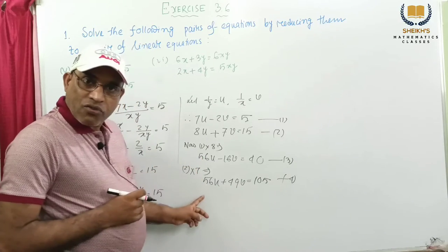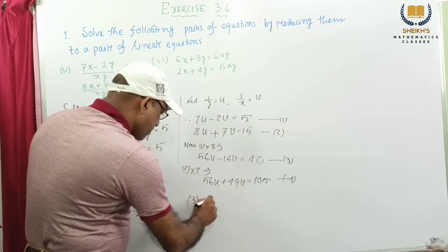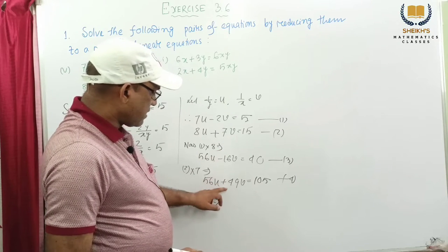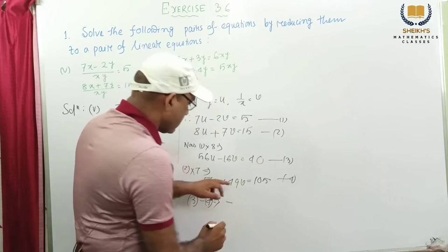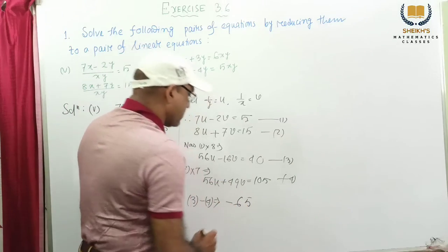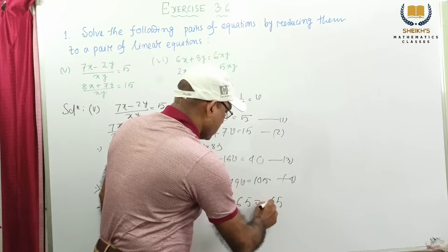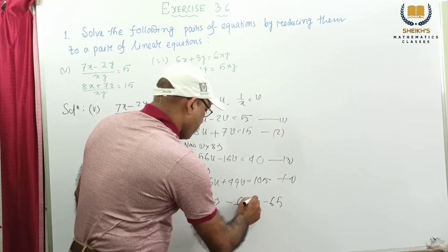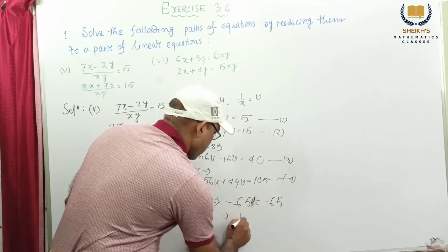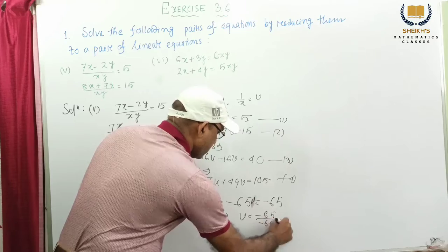Now these two are like coefficients: 56u, 56u. So we subtract these two. 3 minus 4 implies: if we subtract, this cancels. And minus 16v minus 49v will be minus 65v. This is 40, this is 105, minus 65. So this will be minus 65v equal to minus 65, and v equal to minus 65 by minus 65, this equal to 1. Therefore we get v equal to 1.